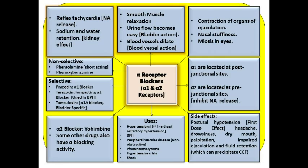This dip in blood pressure gives rise to reflex tachycardia. It also occurs due to release of noradrenaline — because when you block alpha-2 receptors, which are inhibitory, you remove that inhibition, so indirectly noradrenaline gets released, also causing reflex tachycardia. Any vasodilation causes a reduction in blood supply to the kidneys, leading to a lot of renin secretion, resulting in sodium and water retention.